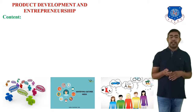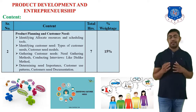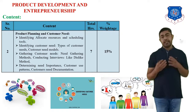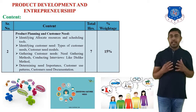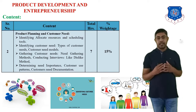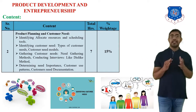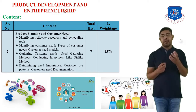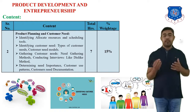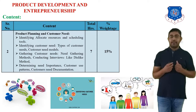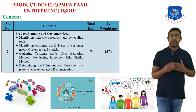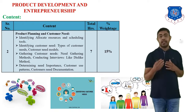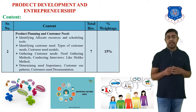The second chapter is Product Planning and Customer Needs. In this chapter you have to learn product planning — identifying and allocating resources and scheduling timelines for your product. You also have to learn customer needs: when you develop any product, you first need to identify customer needs, learn the types of customer needs, and how to gather them using need-gathering methods such as interviews. The approximate percentage weightage of this chapter is 15%.